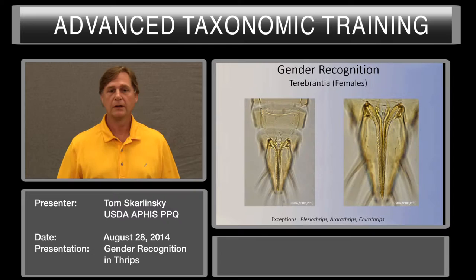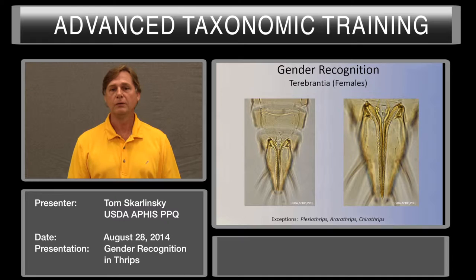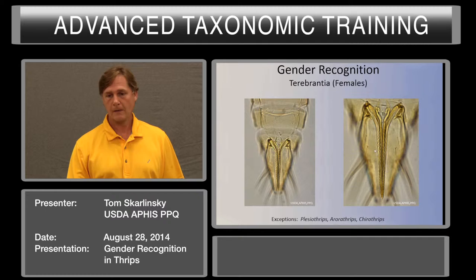In the Terebrantia, you want to look at their ovipositor. The ovipositor in the females is going to have serrate areas — see those little serrations right there? On the ovipositor, that's going to tell you they're a Terebrantia.